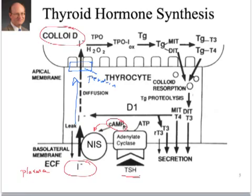The iodide is then incorporated by a heme protein called thyroid peroxidase (TPO). TPO is important because we target this enzyme with anti-thyroid drugs when treating hyperthyroidism. TPO, in the presence of hydrogen peroxide, will add iodide to tyrosine residues on thyroglobulin, creating MIT (monoiodotyrosine) and DIT (diiodotyrosine).